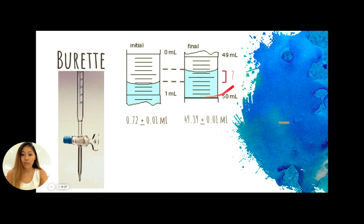Now looking at the final, this one runs from 49 to 50. Seems like it's also going by increments of 0.1. So in this case it seems like the bottom of the meniscus is at around 49.3. So I'm going to set it at 49.39 and again this is to the hundredths so I'm also going to have my uncertainty in the hundredths and my uncertainty is set at 0.01 milliliters.